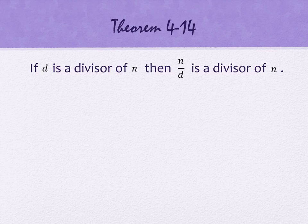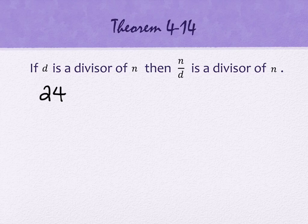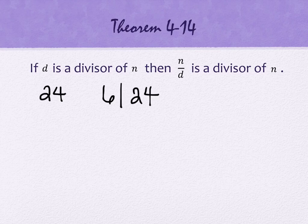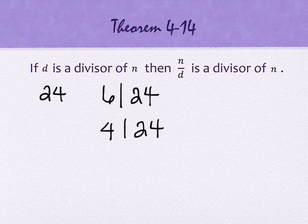Another cool feature about divisors is that if you have a divisor d of a number n, then n divided by d is also a divisor of the original number n. So let's do the number 24. 6 divides 24, but also what is 24 divided by 6? 4 will also divide 24. All this theorem is saying is that these numbers occur in pairs.